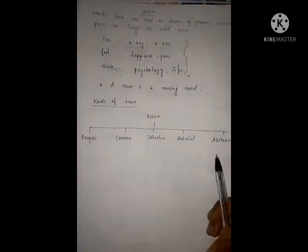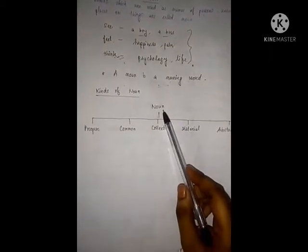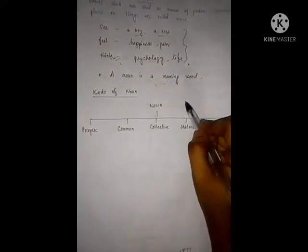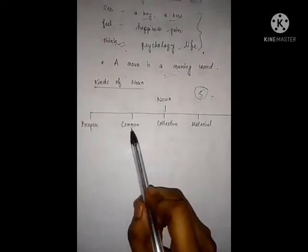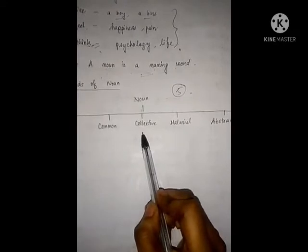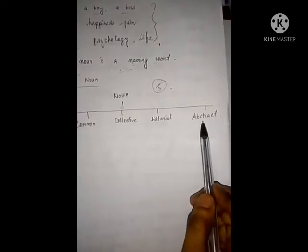See the kinds of noun. There are five kinds of noun. What are they? Number one: proper noun. Common noun. Collective noun. Material noun. And abstract noun.